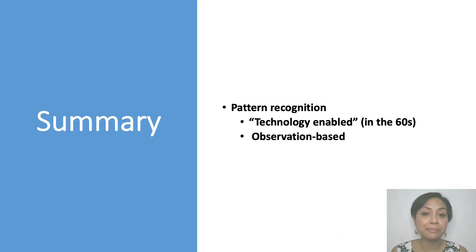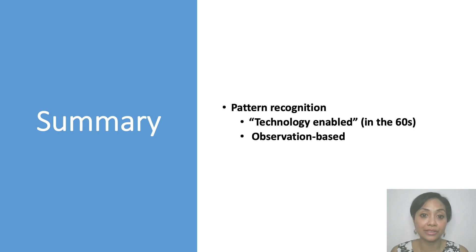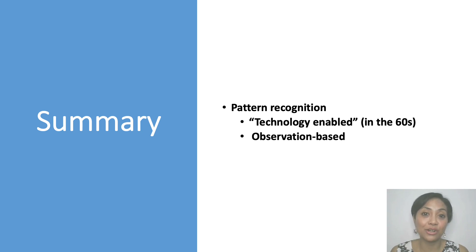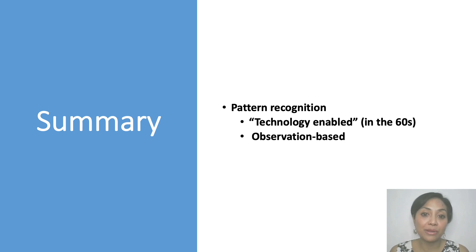So today we've talked a bit about the history of CA and its very first paper. In summary, conversation analysis or CA is a pattern recognition model or framework built from analysis of naturally occurring conversation. It was technology enabled — the availability of sound recording and playback systems in the 60s — and it was, and still is, based on specific observation of naturally occurring conversation. Since the publication of SSJ 1974, people have exploited this framework to formulate other phenomena, but that is for another video.